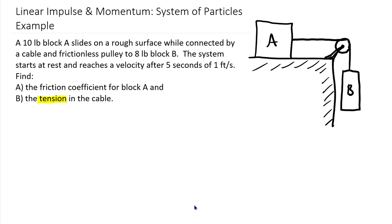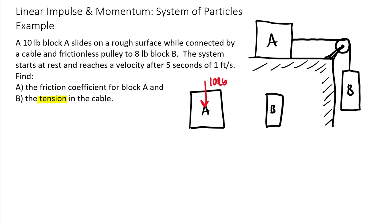We'll start working through it as two particles. For two particles we need to create free body diagrams for both A and B. The forces are fairly straightforward: we have a 10-pound weight force pulling down on A, a normal force NA, and a friction force FA since it's a rough surface and we need to solve for the friction coefficient. For B, we have the same equal tension force due to the frictionless pulley and massless cable, plus the 8-pound force pulling straight down. To make kinetic diagrams, the velocity of A pulls to the right and the velocity of B goes down.